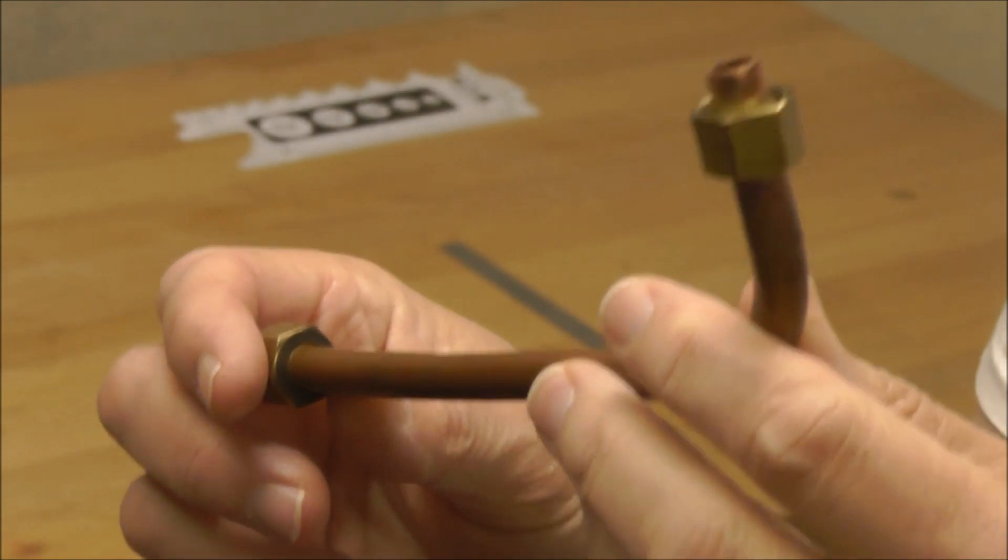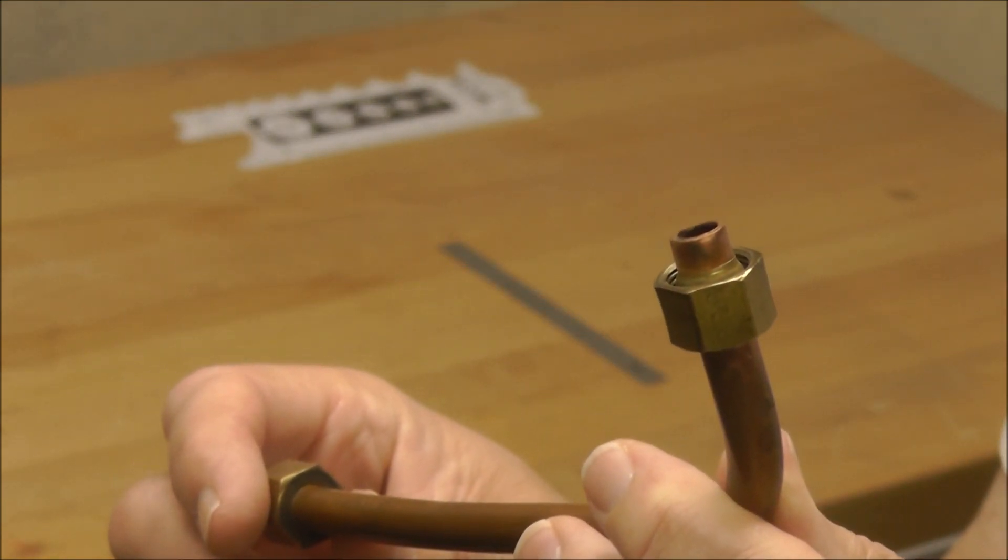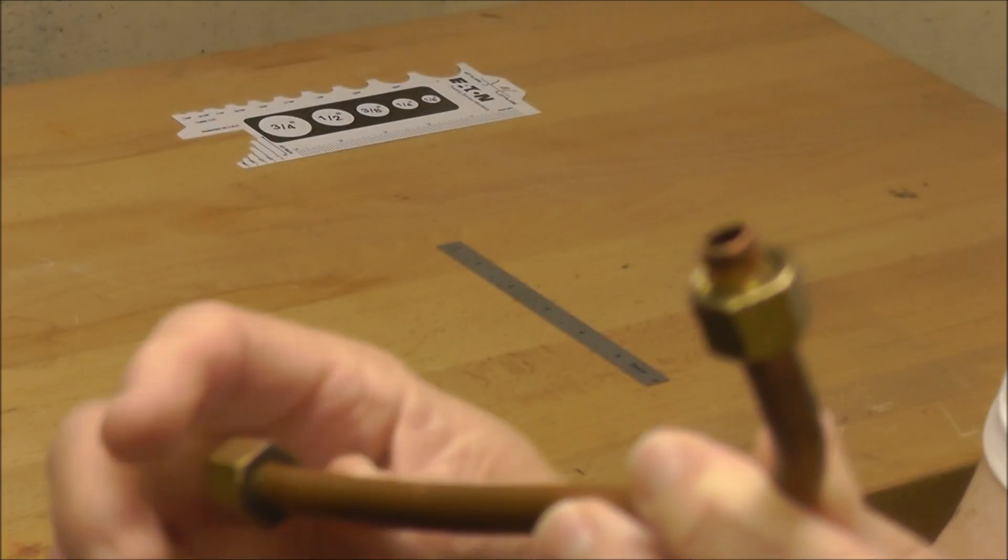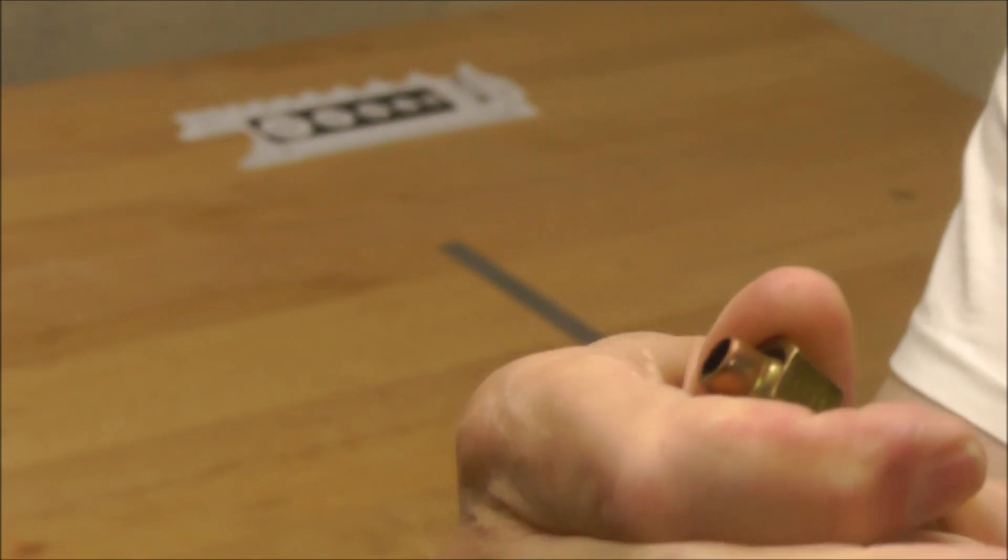This is a transfer tube for an air compressor. Compression nuts and ferrules are typically made of brass most of the time. They have to be able to compress. They have to be malleable.